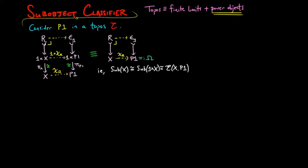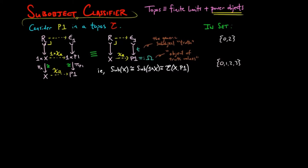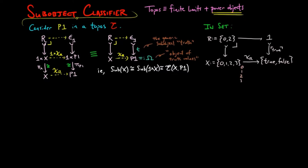P1 is typically written as capital Ω and sometimes called the object of truth values, while the inclusion morphism is the generic sub-object called true or truth. In the category of sets, given the subset consisting of elements 0 and 2 of the set {0, 1, 2, 3}, we see that the set of truth values consists of just the elements true and false, which is the power set of a singleton set, where false is the empty subset and true is the entire subset. The generic sub-object is the set map with domain as the terminal object which picks out the element true. The characteristic map for R sends 0 and 2 to true and 1 and 3 to false.